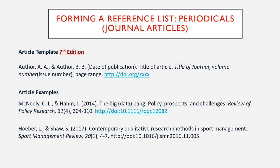A periodical is a type of source that includes journals, magazines, newspapers, and newsletters. Typically you cite one article of an issue in a periodical. The template guideline for citing an article includes the author's last names — remember there is a space between the initials of author's names — date of publication, title of the article with the first letter of the title and subtitle capitalized, title of the journal, volume number italicized, issue number not italicized, page range, and a DOI or digital object identifier.